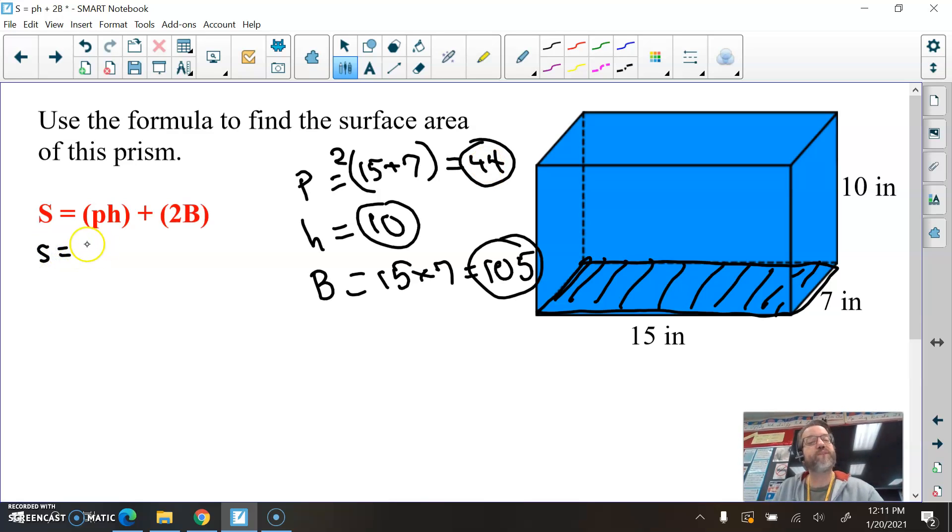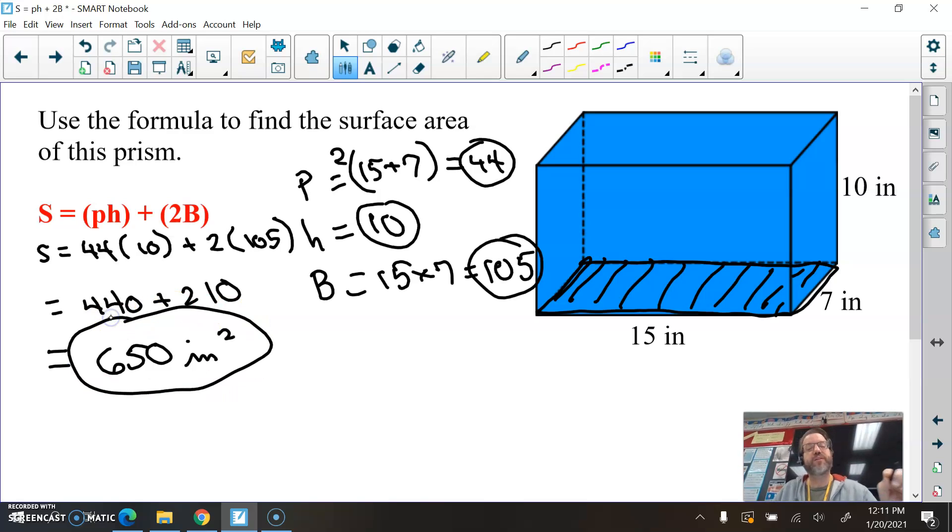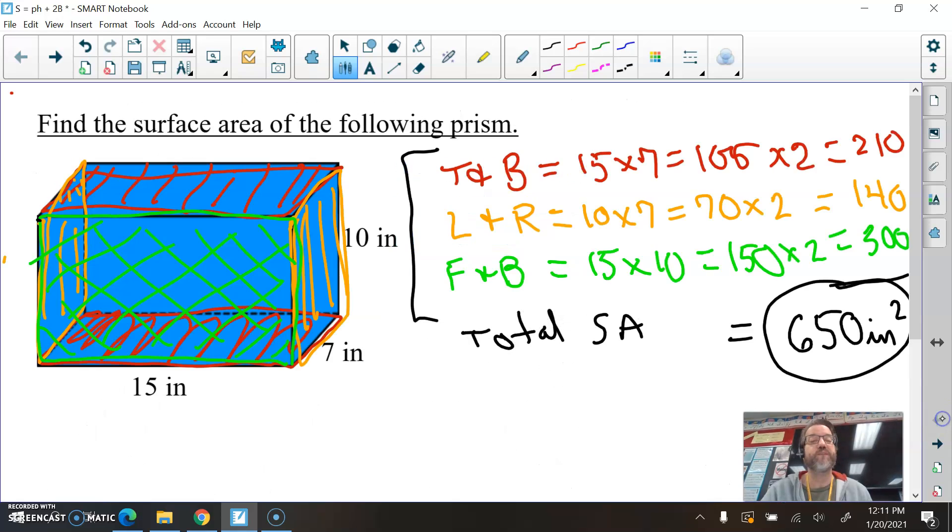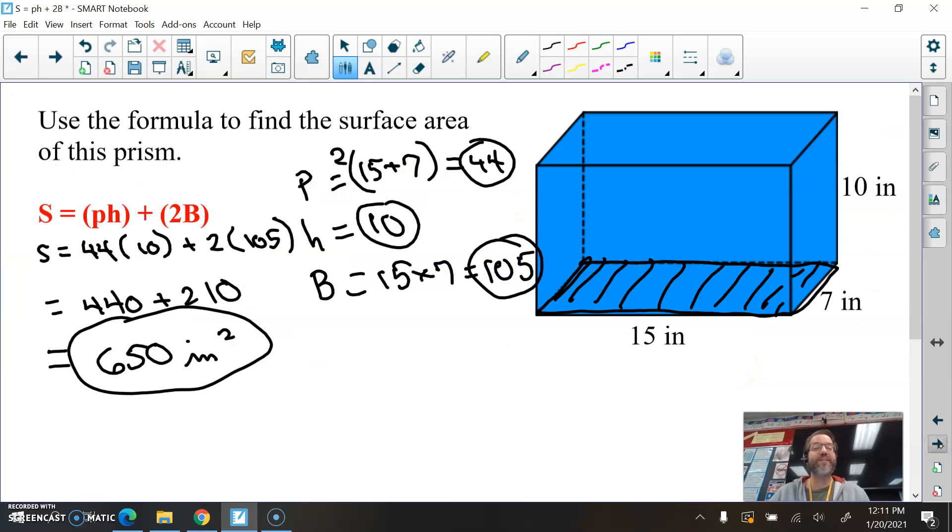And now we just plug these values in here to find our surface area. Surface area equals P, that's 44, times H, which is 10, plus 2 times big B, which is 105, the area of the base. And so 44 times 10 is 440. And 2 times 105 is 210. When you add these together, you get 650 square inches. Remember when we did this problem before, earlier in this lesson? Let's see if we got the same answer. 650 square inches. What? It's the same either way. So those of you that prefer using formulas, this is a nice way to find surface area of prisms by using this formula.